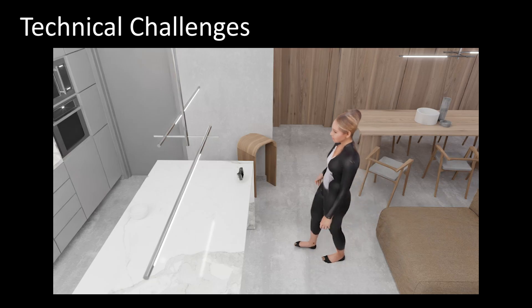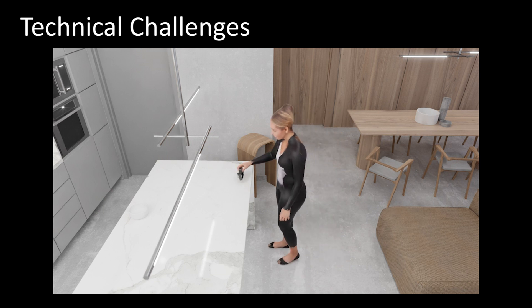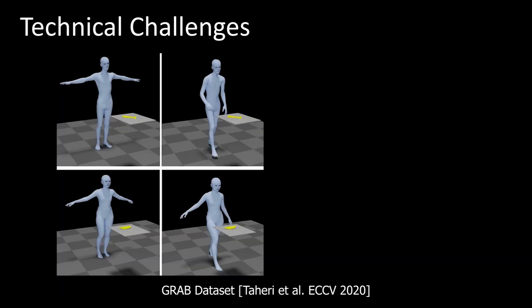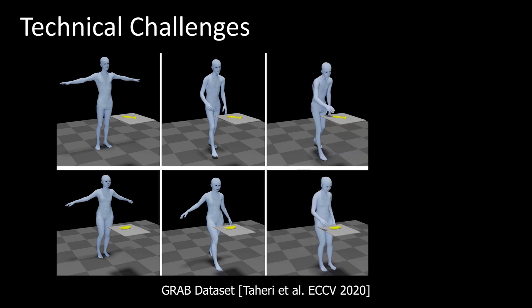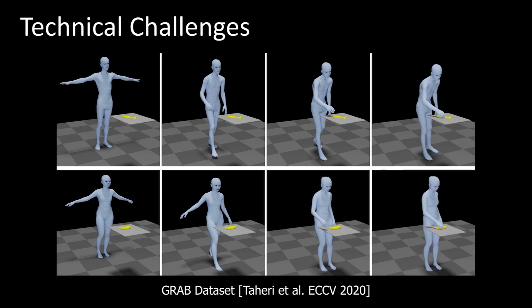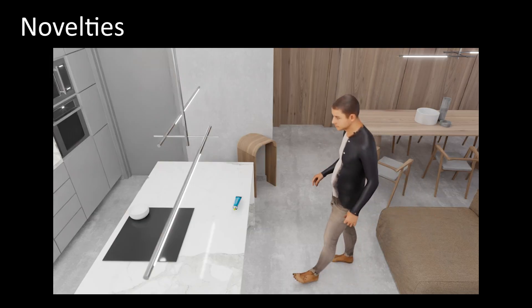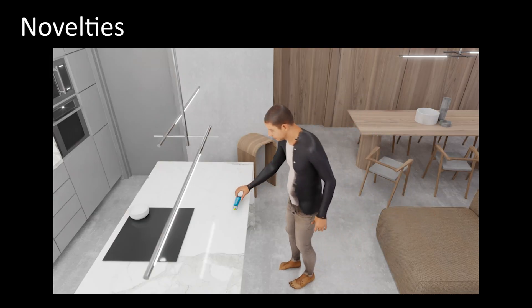GOAL's overall task is challenging and multifaceted. The avatar needs to walk toward the object with appropriate foot-ground contact, orient the head towards the object, reach out, and grasp it with a realistic hand pose and hand-object contact. Achieving this level of realism requires several technical novelties.